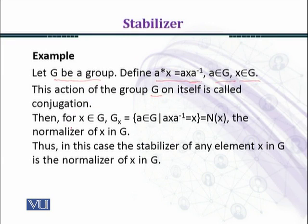This action of the group G on itself is called conjugation. Then for x belonging to G, G_x equals the set of all those a belonging to G such that axa inverse equals x.